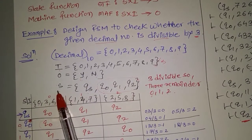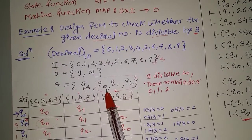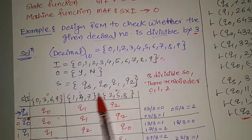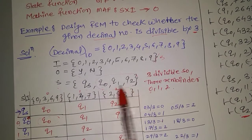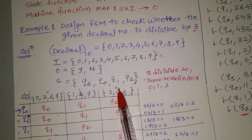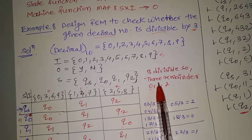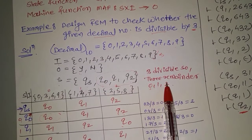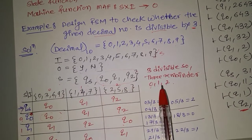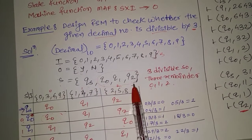S means states. Qs is the start state. There are three more states: Q0, Q1, and Q2. Why three states? Because we are checking divisibility by 3, so there are three possible remainders. Remainder 0 is denoted by Q0, remainder 1 is denoted by Q1, and remainder 2 is denoted by Q2.